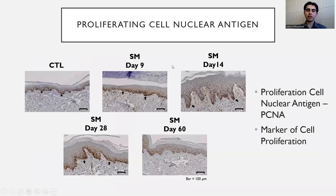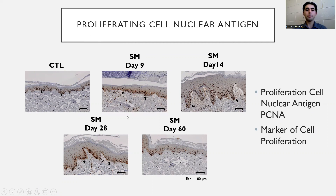We then utilized an immunohistochemistry technique where we looked at proliferating cell nuclear antigen (PCNA), a protein and marker for cell proliferation. In the control skin, we see contiguous expression along the basal layer of the epidermis, as indicated by the star. By day 9 through day 28, there is an upregulation in both the basal layer and the suprabasal layer, as indicated by the arrow. And by day 60, it looks very similar to control, basically approaching control levels.